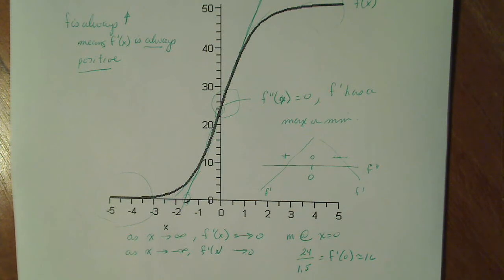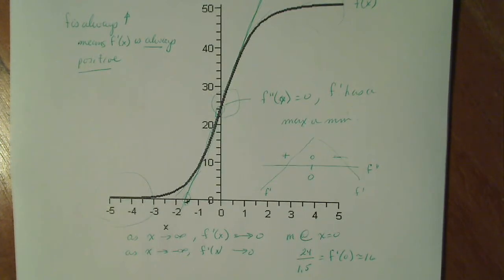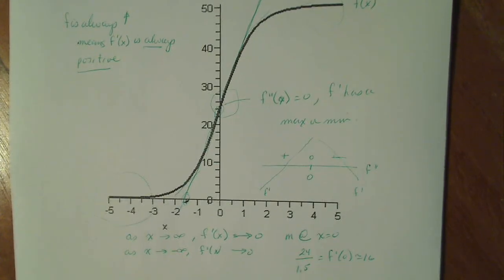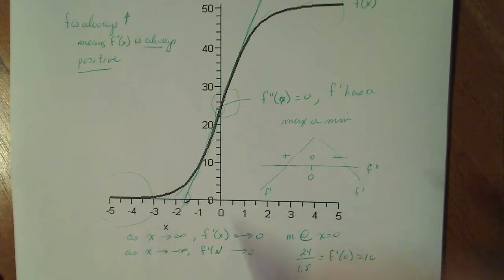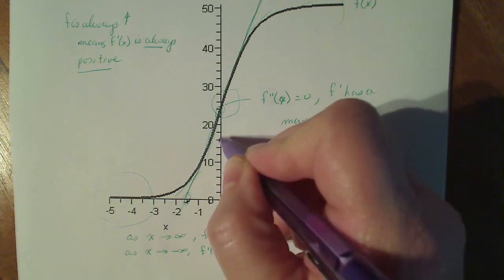So if I draw the picture in a different color, let's say I'm going to draw my derivative in purple. It should look like this. It's going to cross up here at 16, 10, 12, 14, 16 approximately.